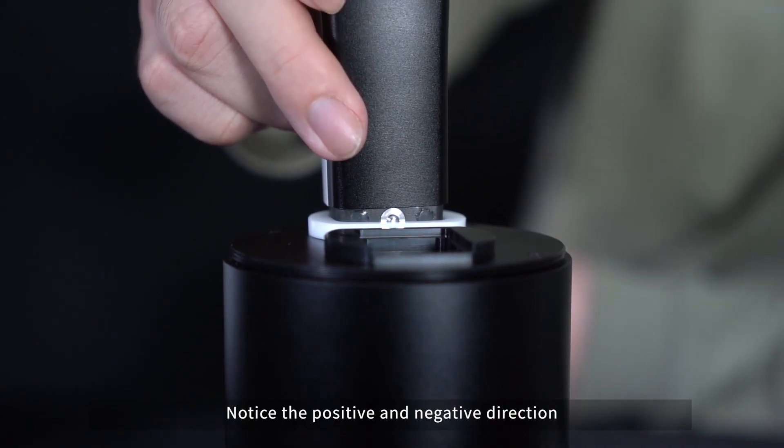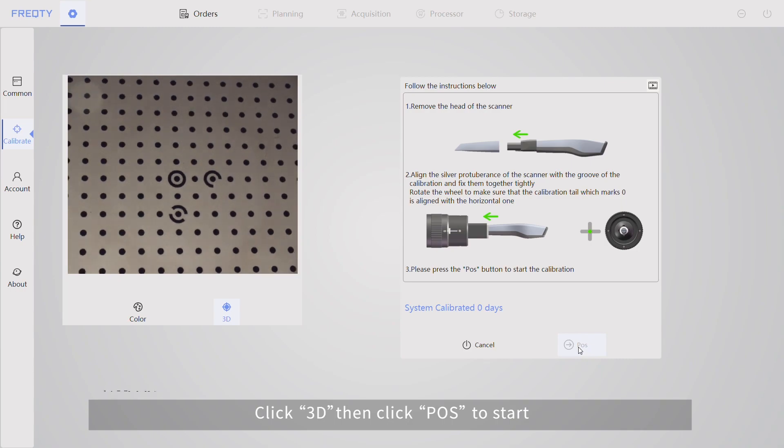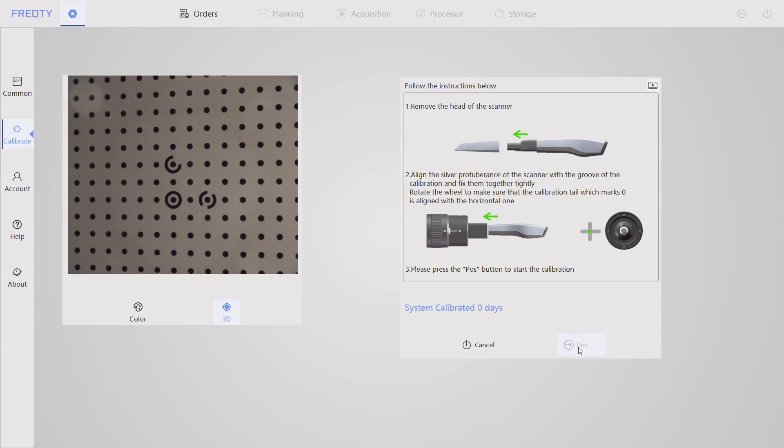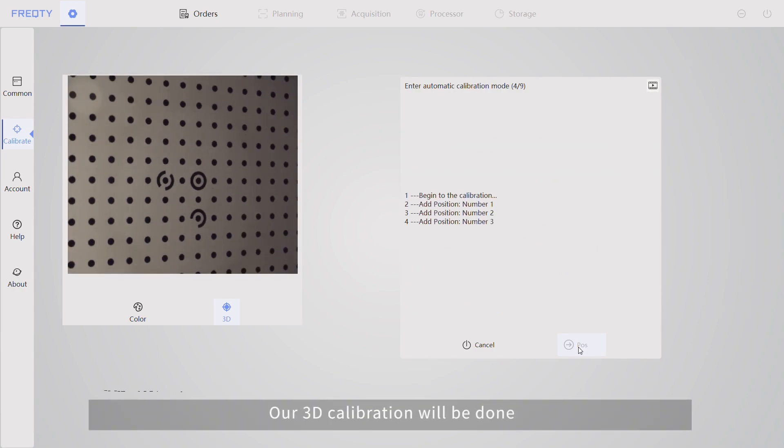Notice the positive and negative direction. Click 3D, then click pause to start. Wait for a while, our 3D calibration will be done.